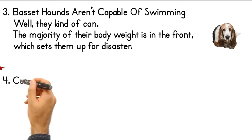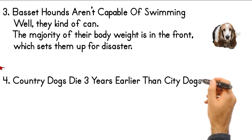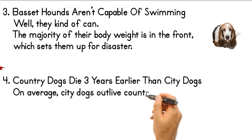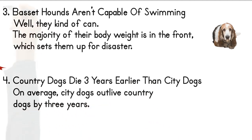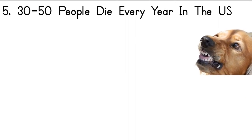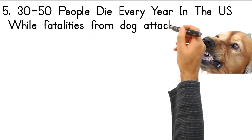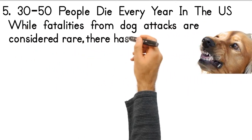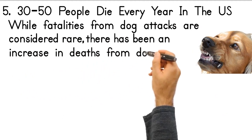4. Country Dogs Die Three Years Earlier Than City Dogs. On average, city dogs outlive country dogs by three years. 5. 30-50 people die every year in the U.S. from dog bites. While fatalities from dog attacks are considered rare, there has been an increase in deaths from dog bites in the United States.